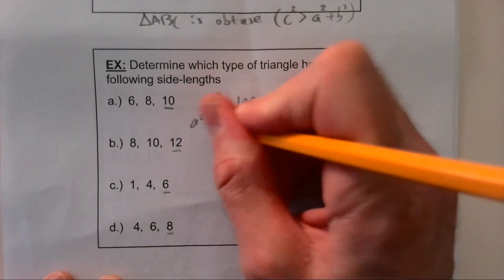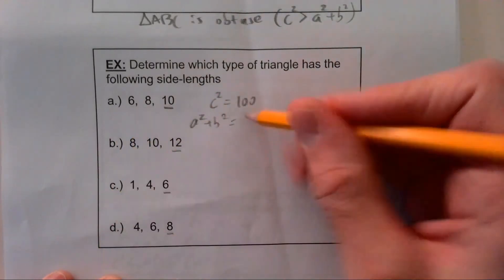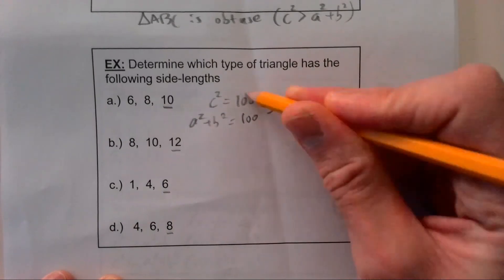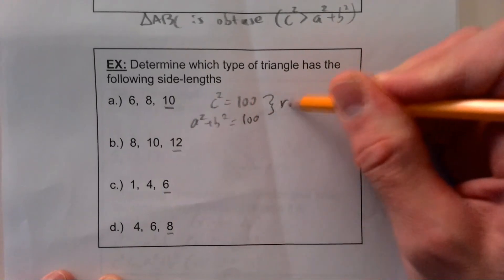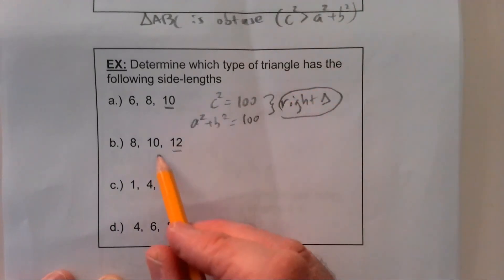A squared plus b squared, that's 36 and 64, which is also 100. Oh, cool. Since those are equal, this is a right triangle. Alright, next one.